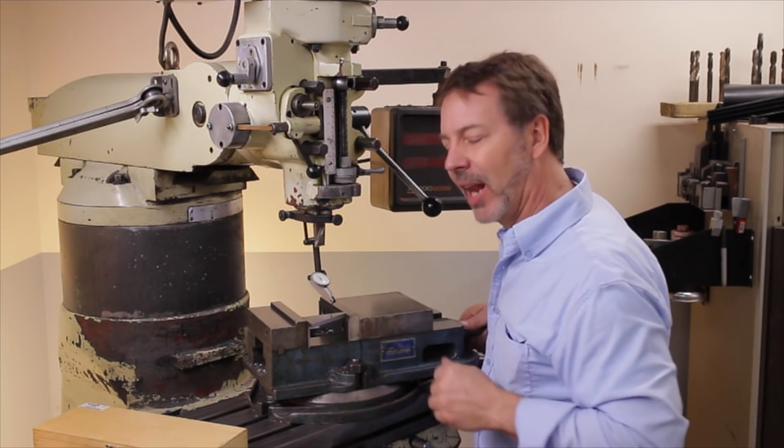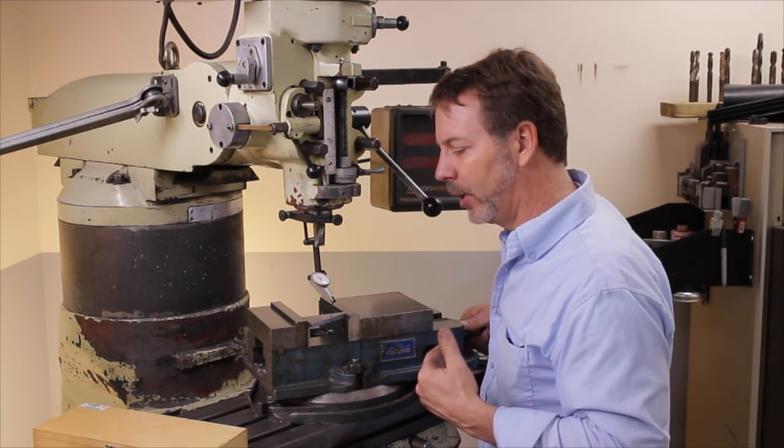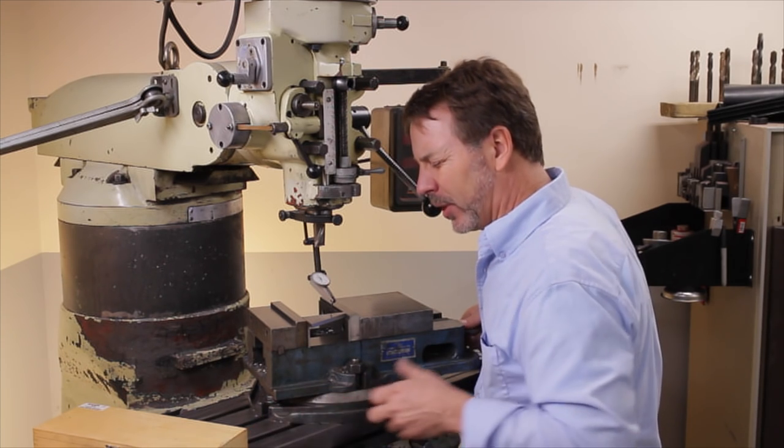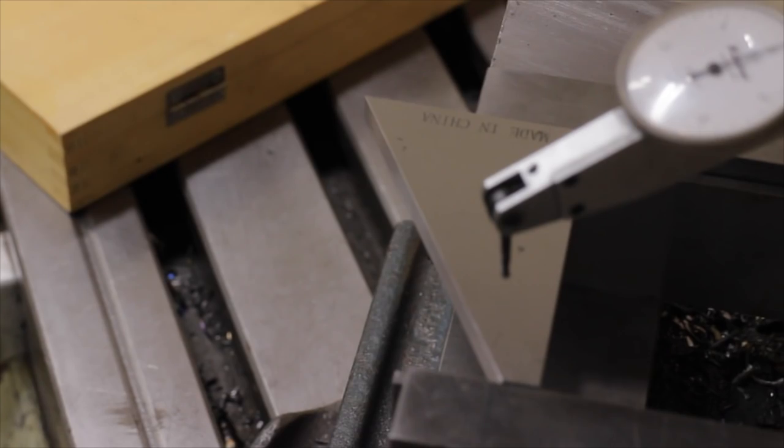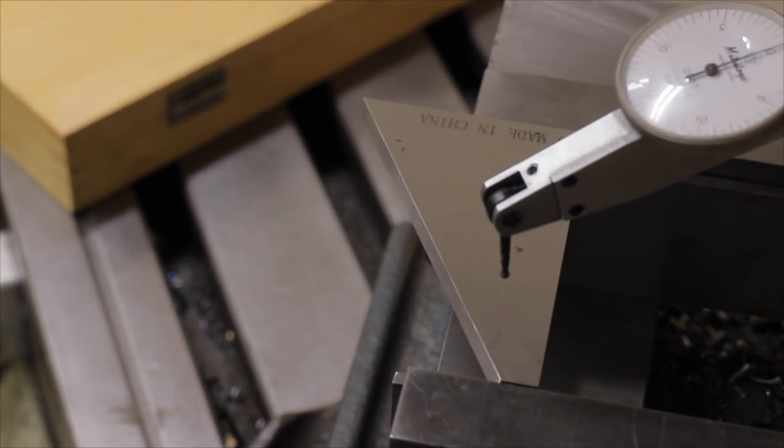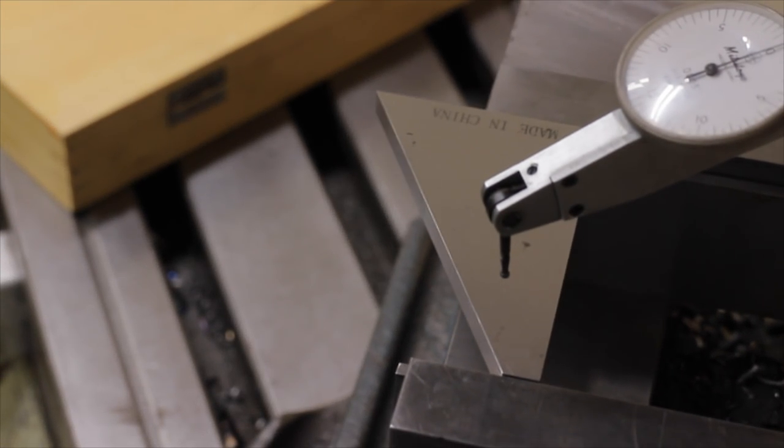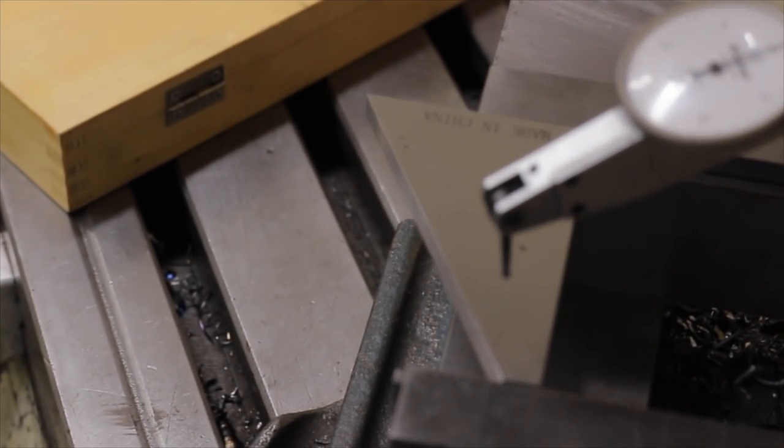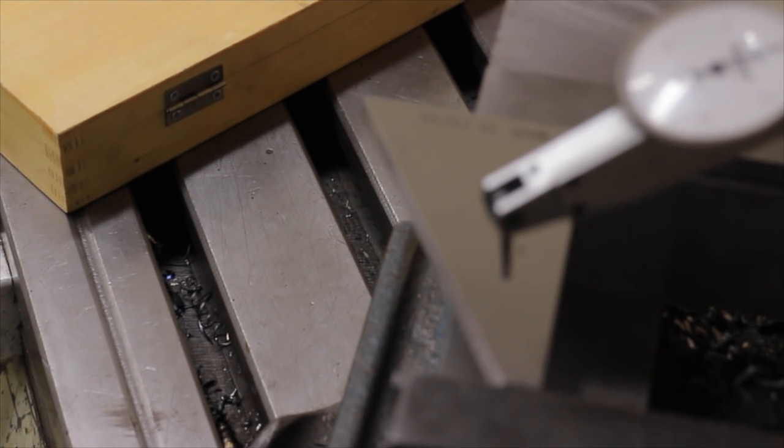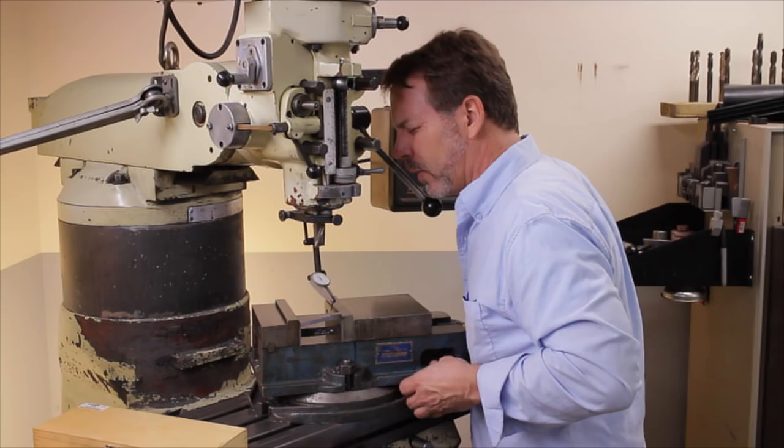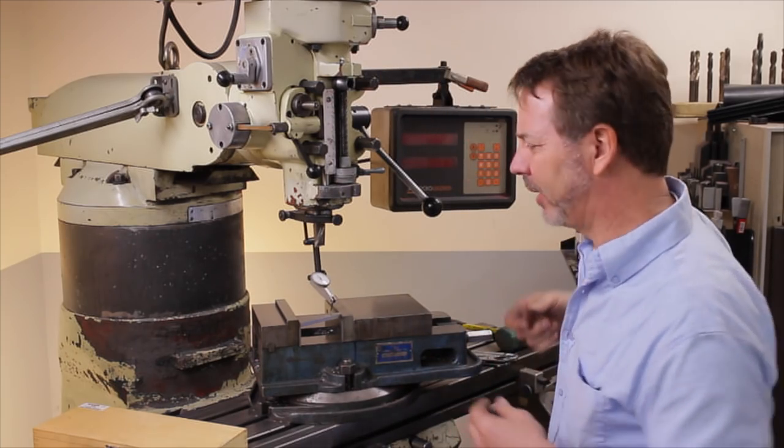Now, we need to get kind of a crude alignment. What I'm going to do here is look at this edge and line it up to the table here. And that gives me a nice little ballpark.